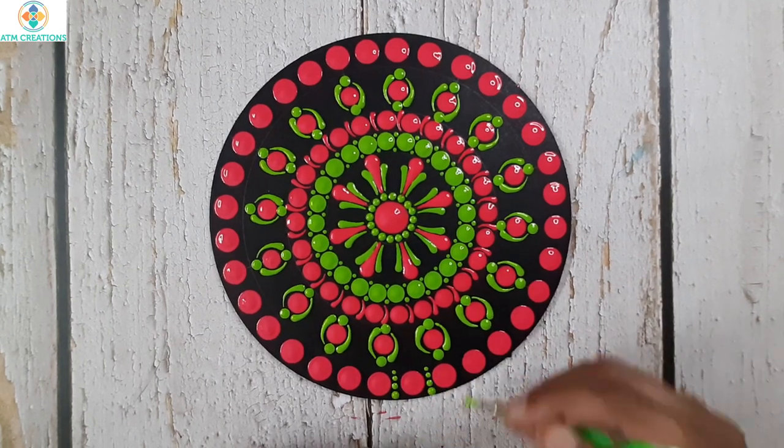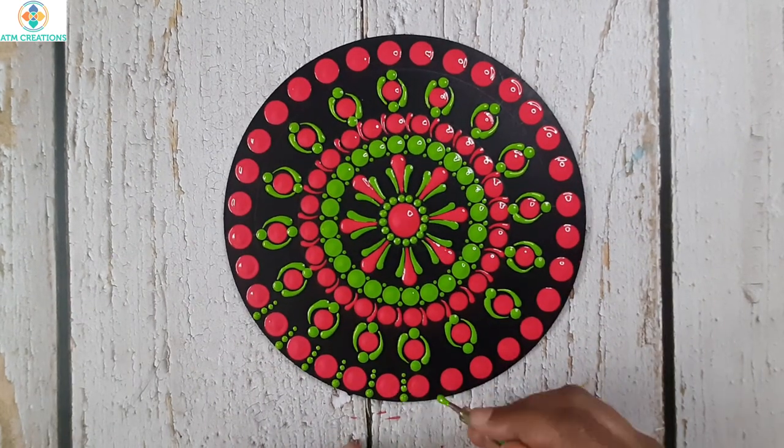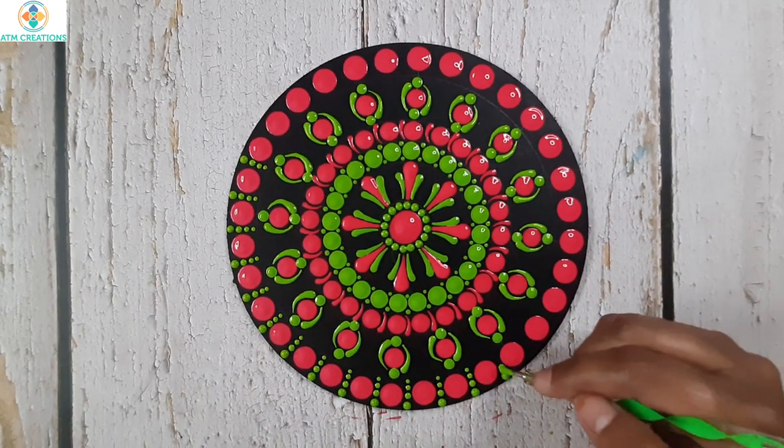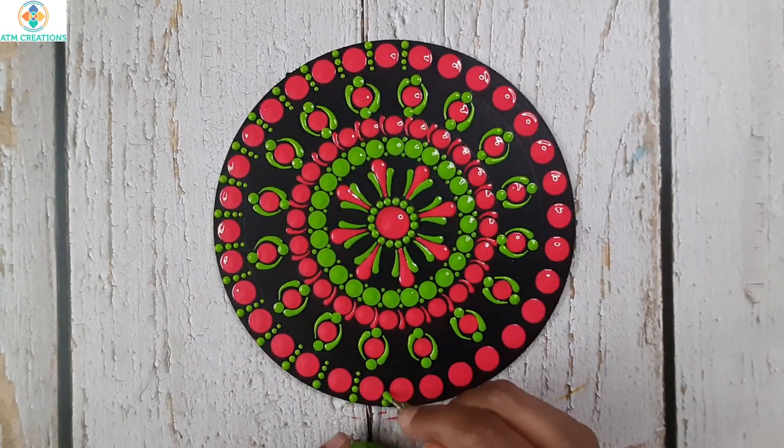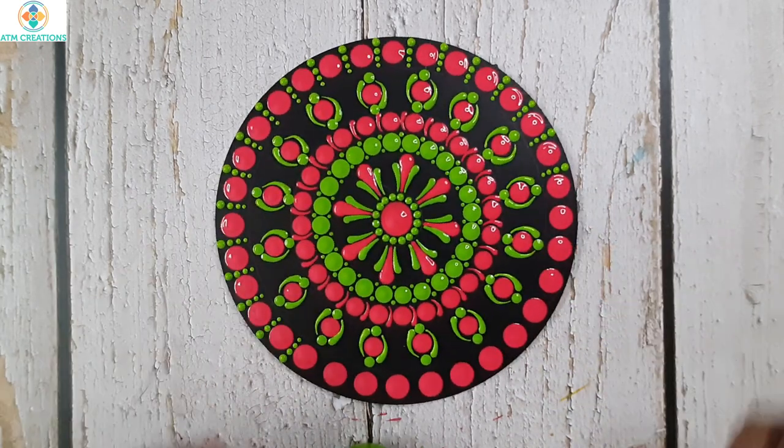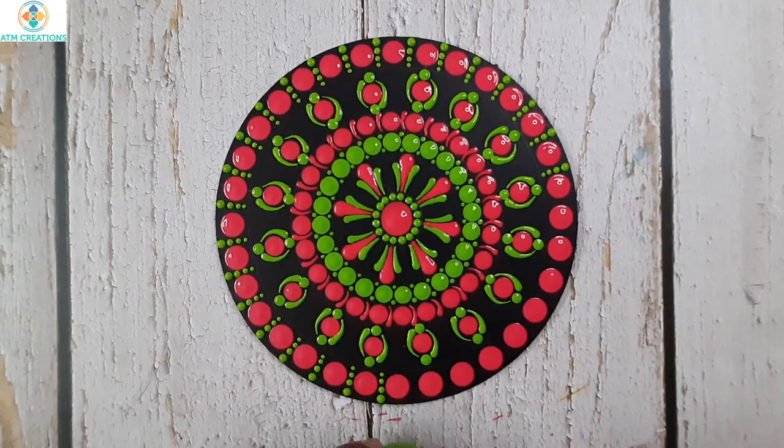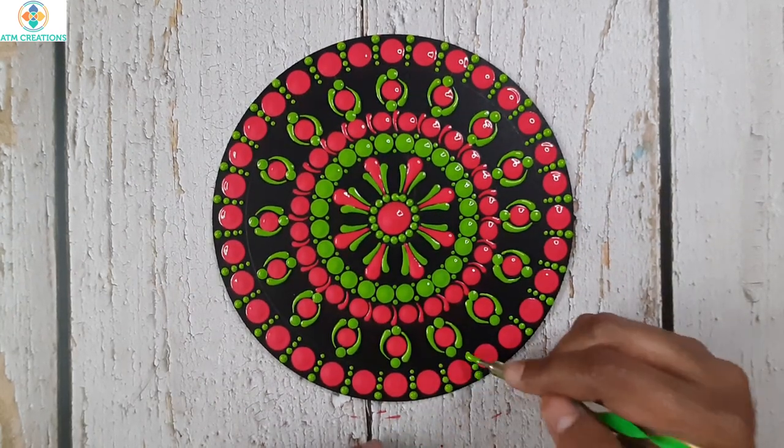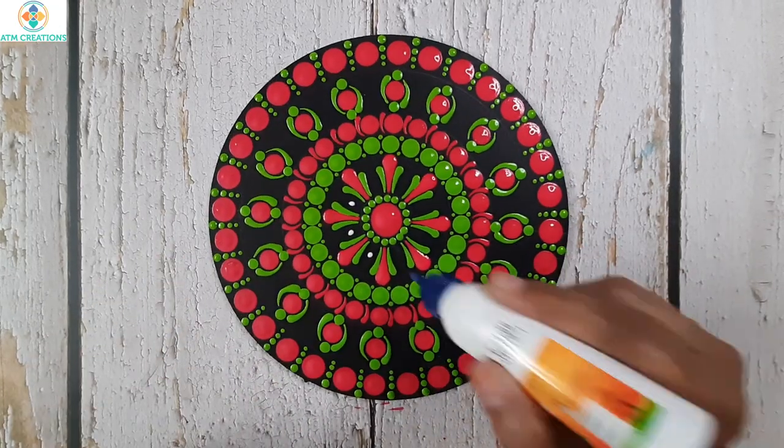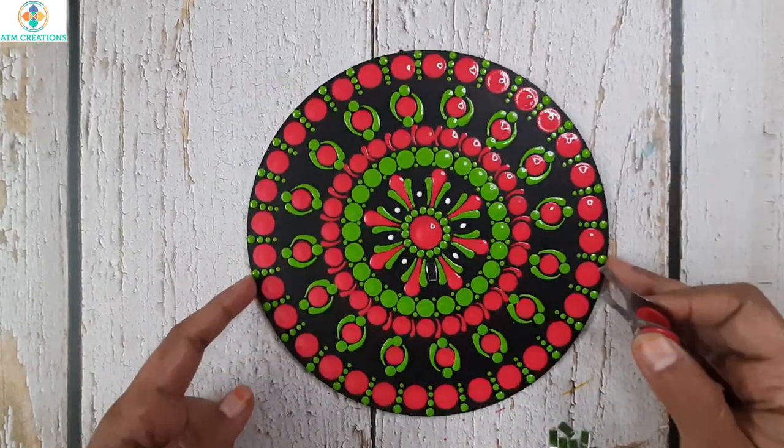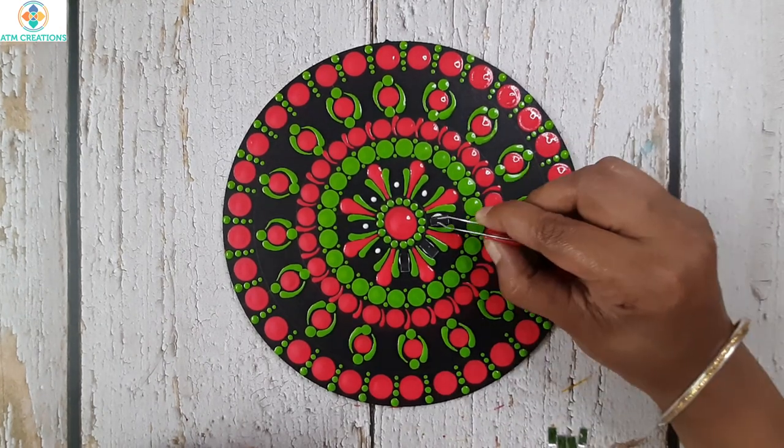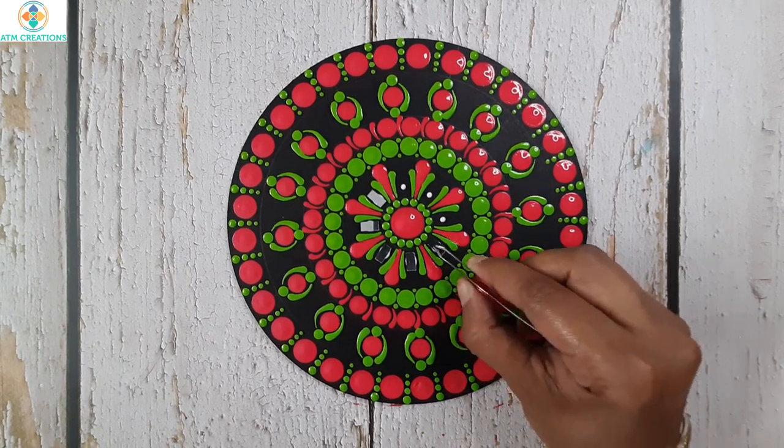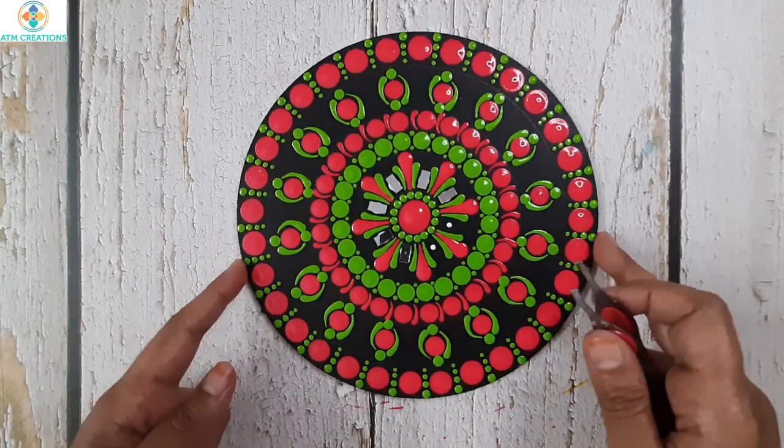I'll work the dots in greenery now. I'll make some pink dots. Now I'll keep some green dots. Now I'll move the dots in greenery.